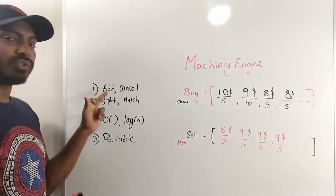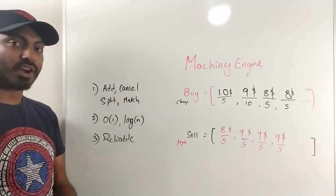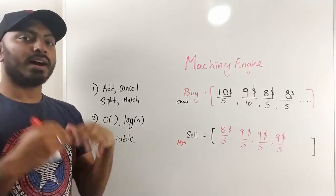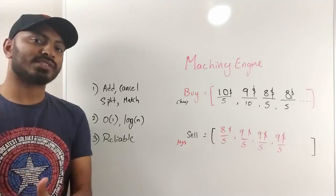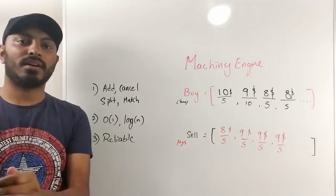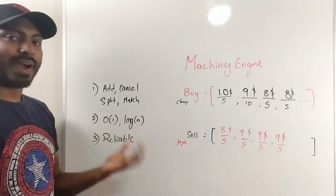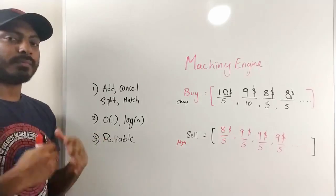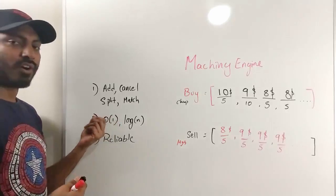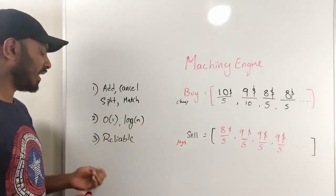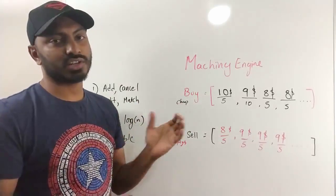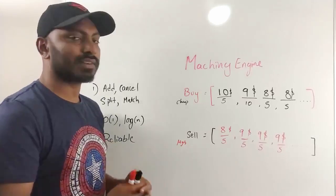The matching engine should be able to add an order, cancel an order, and split an order — meaning if I want to buy 10 stocks and nobody is selling 10 as a whole, the engine can buy in splits. It should also match orders efficiently, ideally in O(1) or O(log n) time, and do everything reliably.